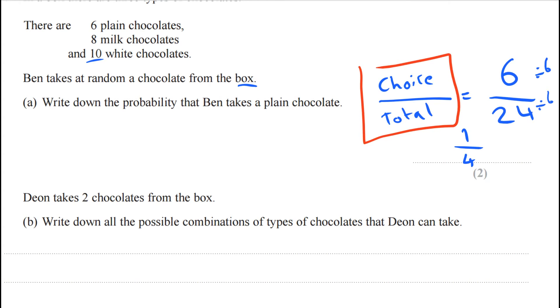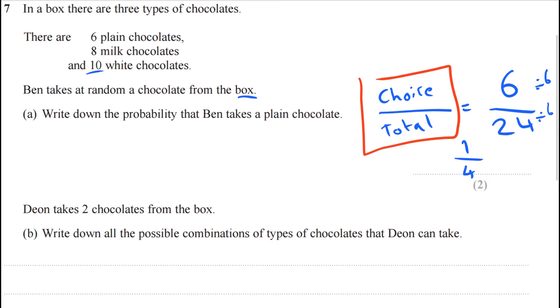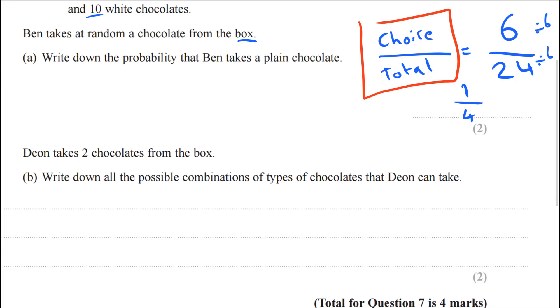Okay, as a bonus round let's do part B. It says Dion takes two chocolates from the box. Write down all the possible combinations of types of chocolate that Dion can take. So you might have seen this question and wonder what they're talking about.